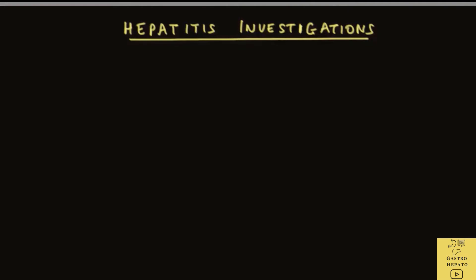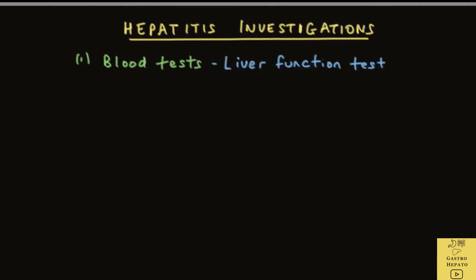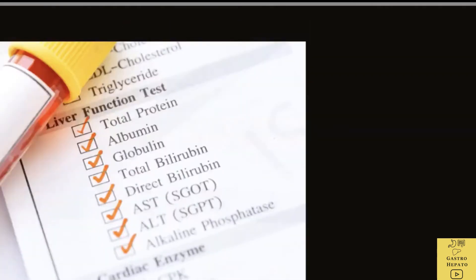If your doctor suspects hepatitis, they will take a proper history, do a physical examination, and then order investigations. These include blood tests — for example, the liver function test, which is done to determine how efficiently the liver is functioning.